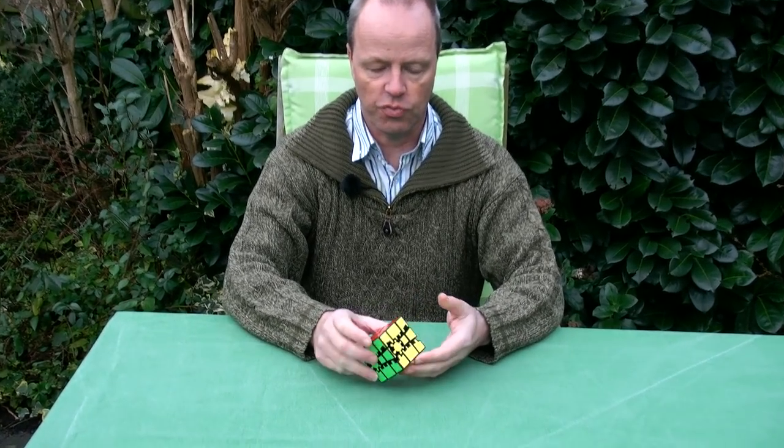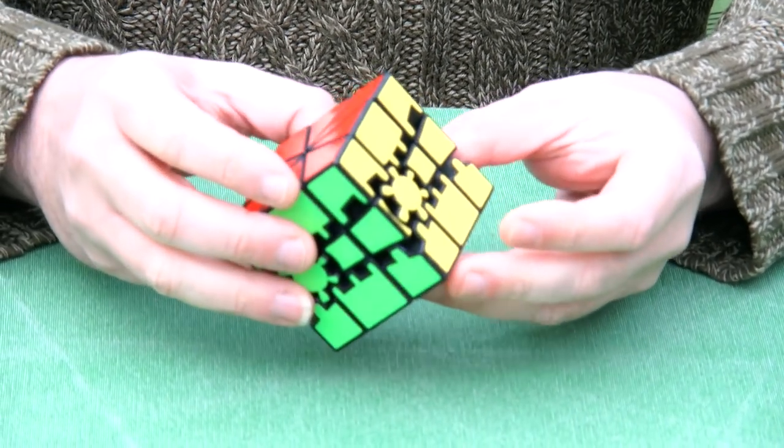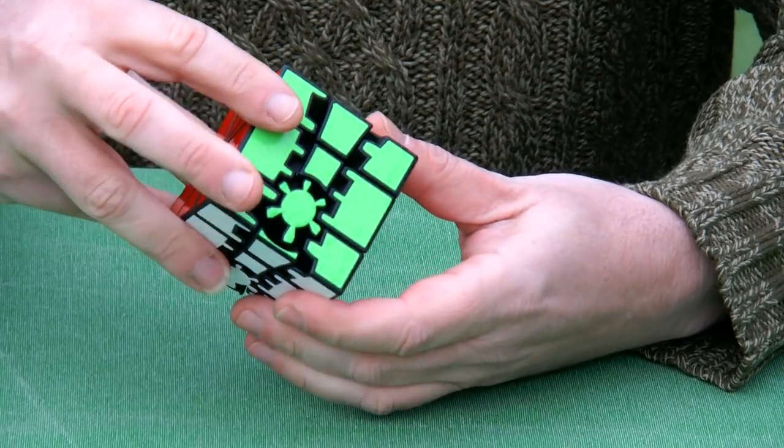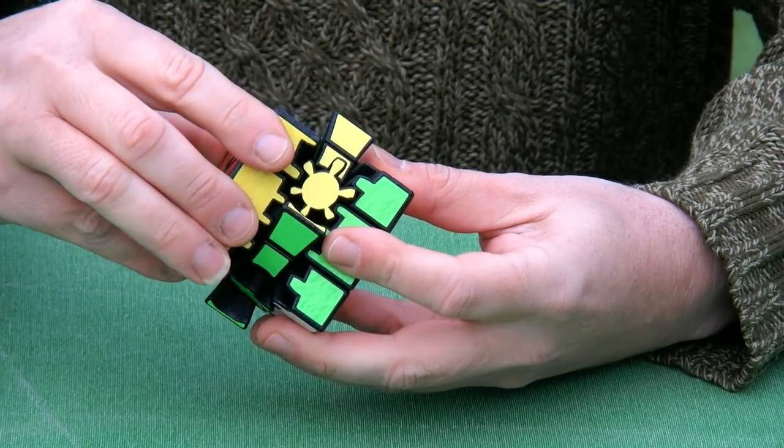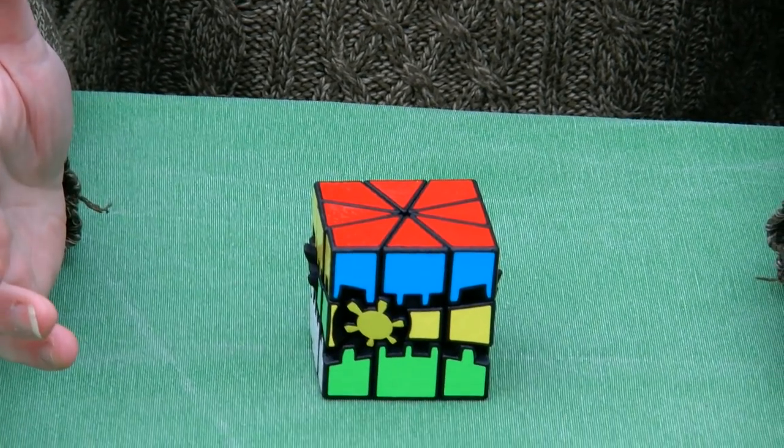And this is what the puzzle looks like. It's a bit like a Rubik's cube but with gears. Here you see the gears at some of the faces, and if you turn it, it's in a different orientation.